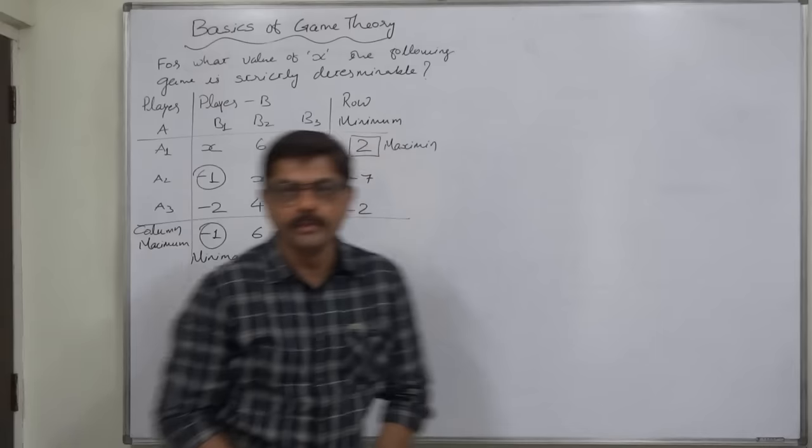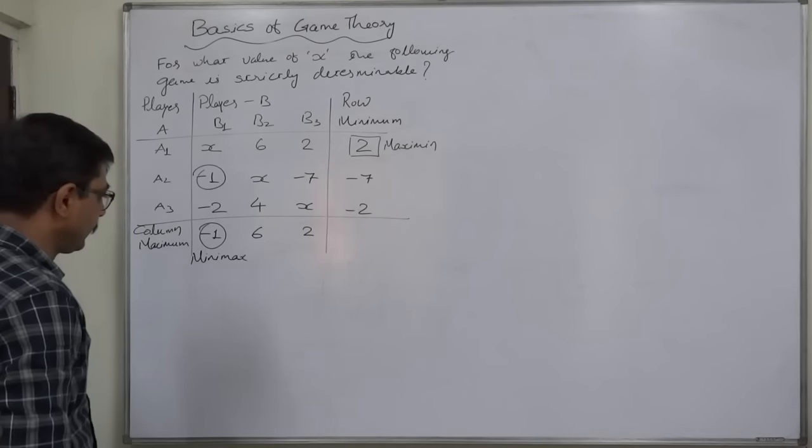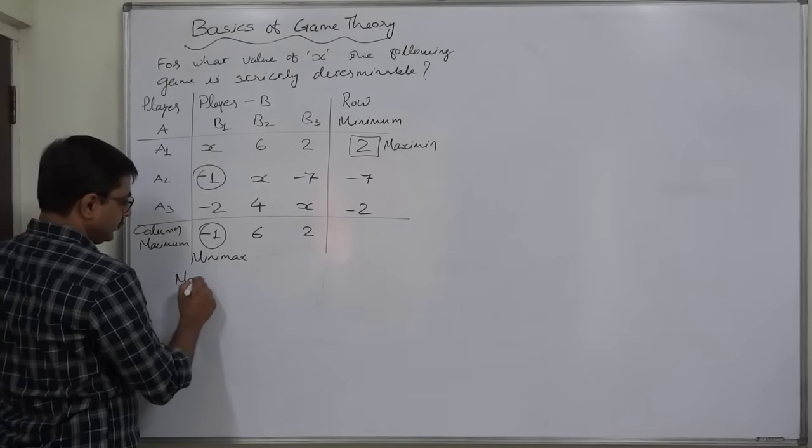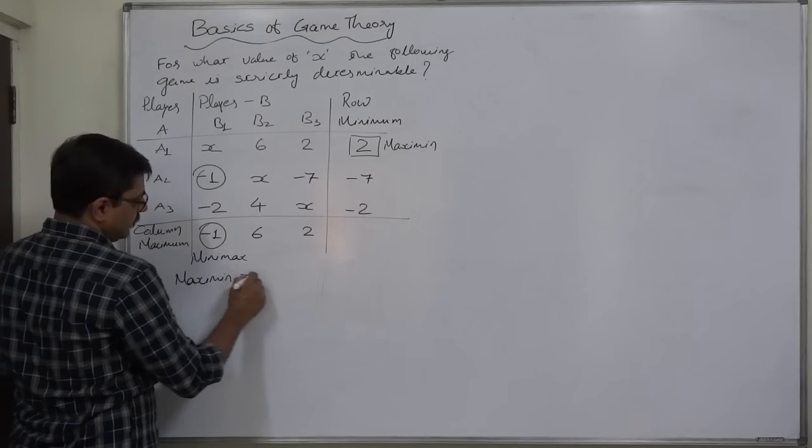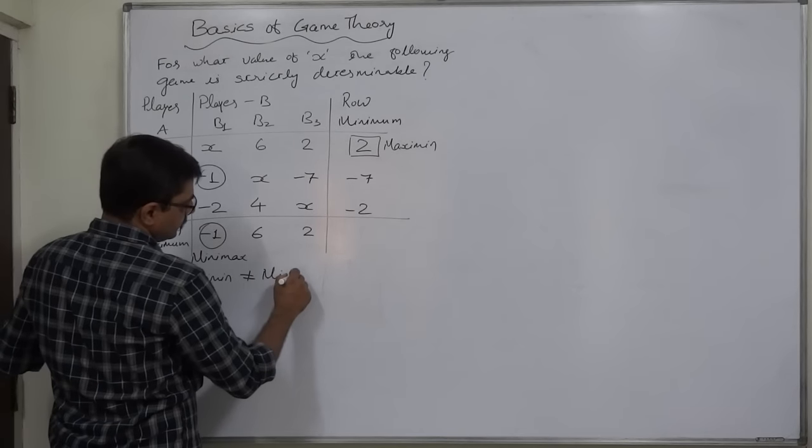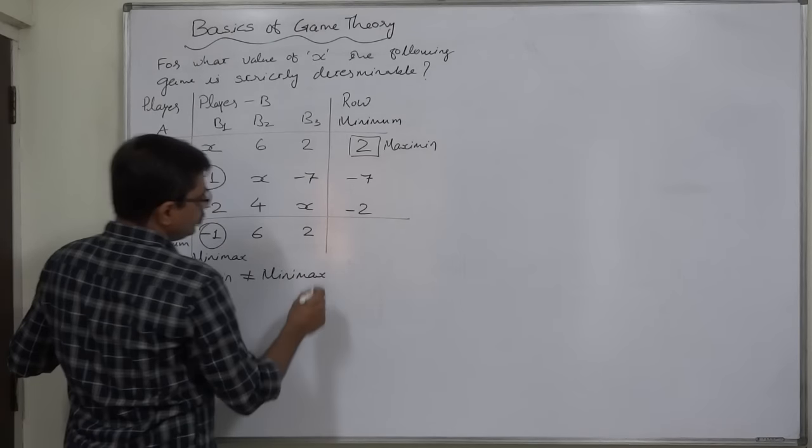To have the game strictly determinable, maximin equals to minimax equals to value of game. Here it is not, maximin is not equal to minimax.